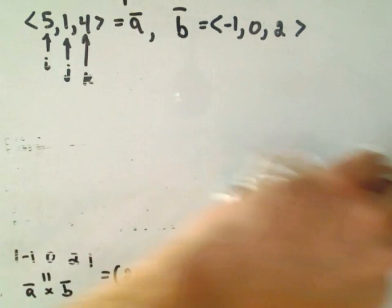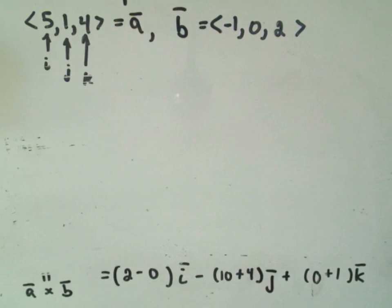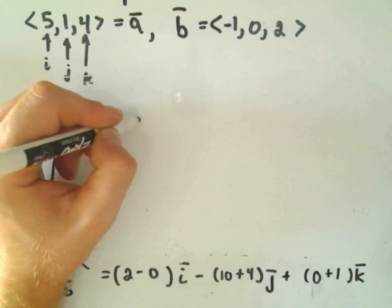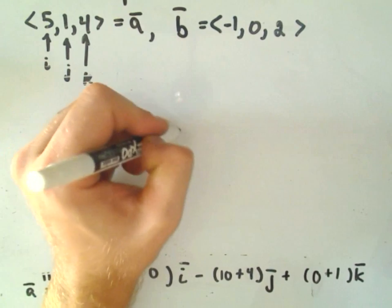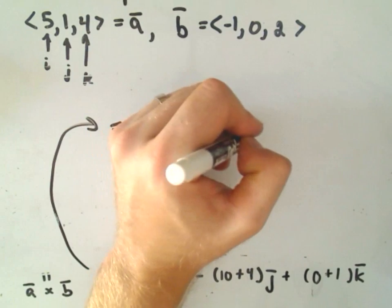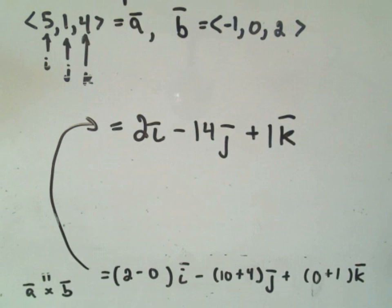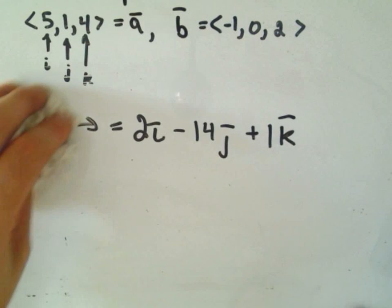And now all we have to do is just simplify that down and we've got our cross product. Okay, so again, this is going to be a vector that's perpendicular to both A and B. So if we simplify that down, to me it looks like we get 2i, it looks like we get minus 14 J. And then it looks like we get plus 1 times vector K. Okay, so there we go. We've got our cross product of our two vectors.